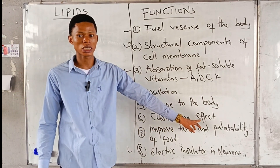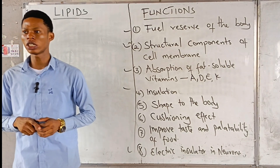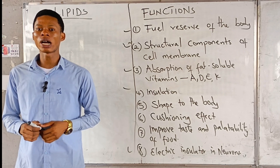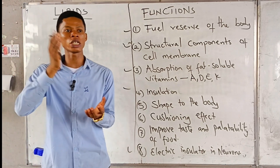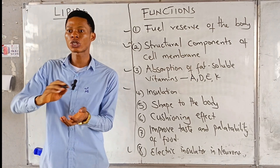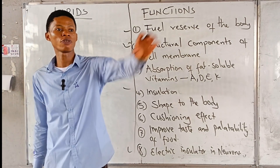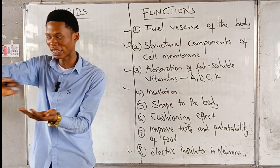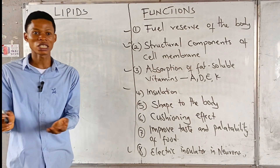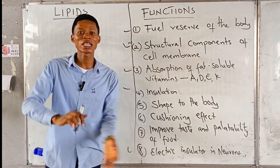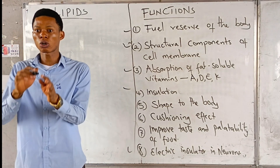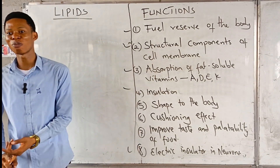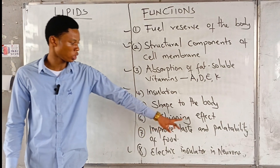Another function is the cushioning effect: protecting internal organs. When you are slaughtering a goat, you see some organs with a fat layer around them. That fat layer is serving a cushioning effect — it surrounds some internal organs, protecting them from external harm. That is the cushioning effect.